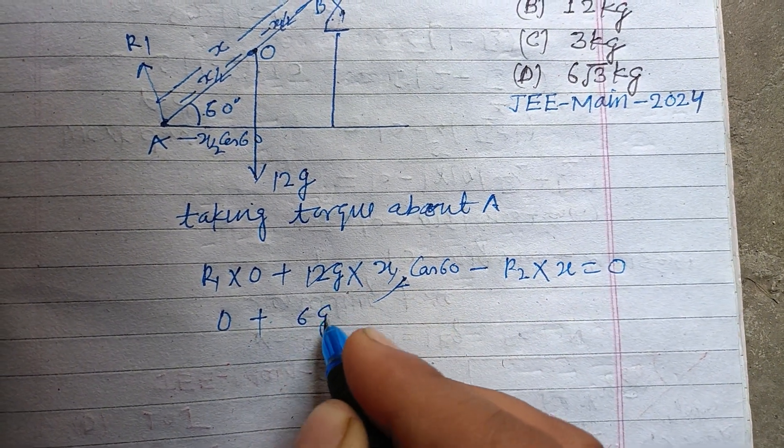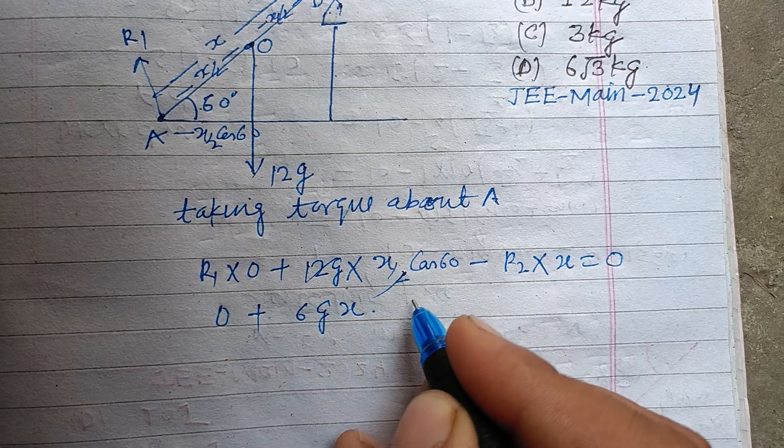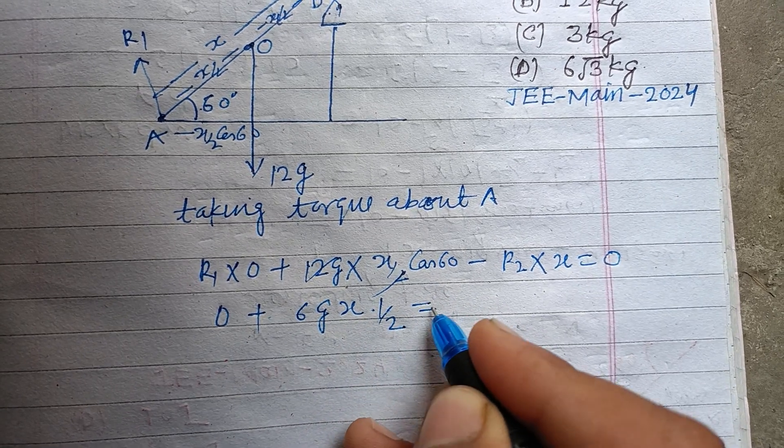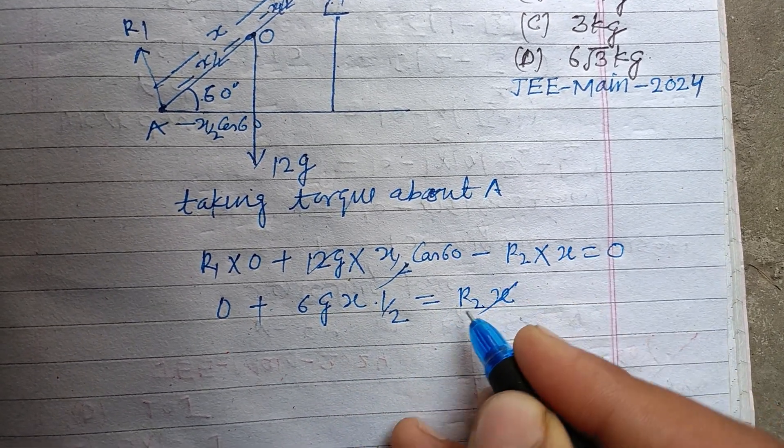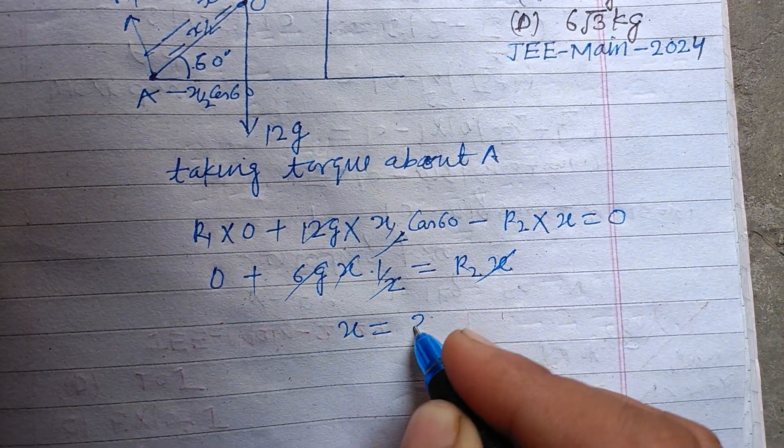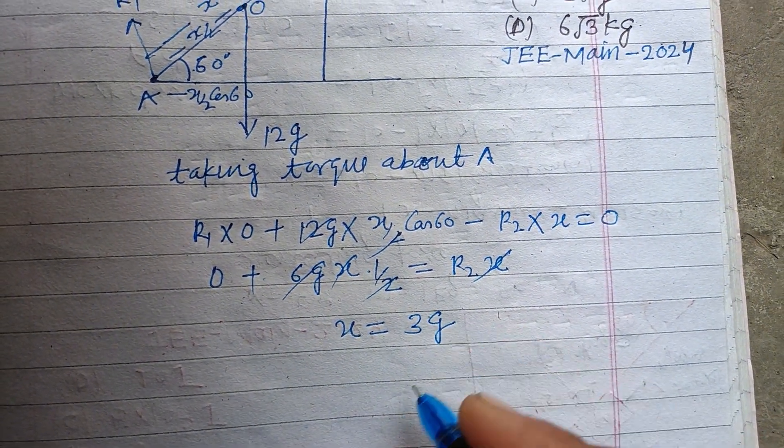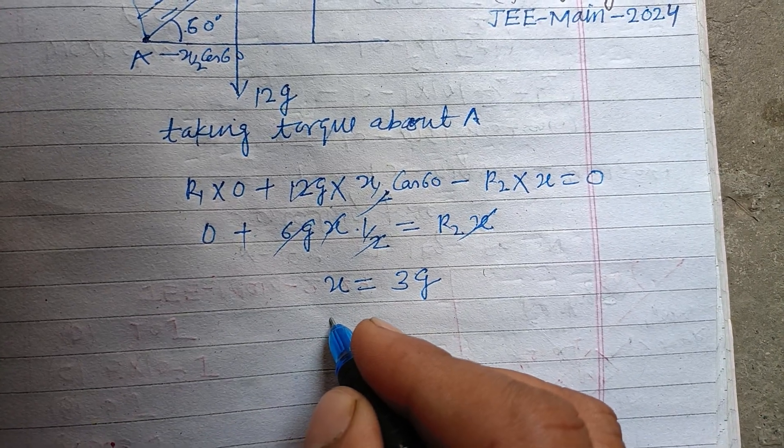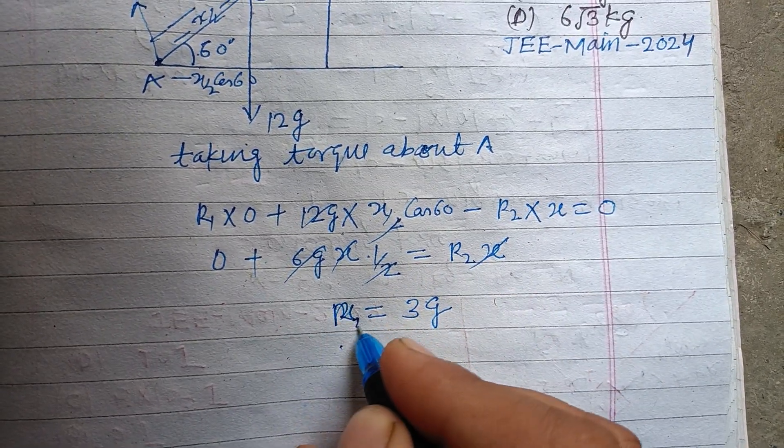2, 6, 12... 6g times X cos 60 is 1/2 equals R2 into X. X is cancelled. 2, 3, 6... so R2 is 3g.